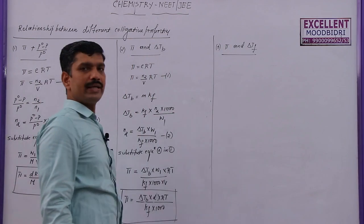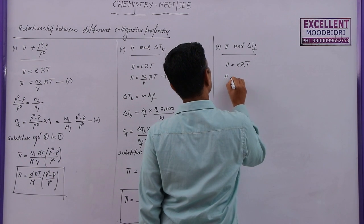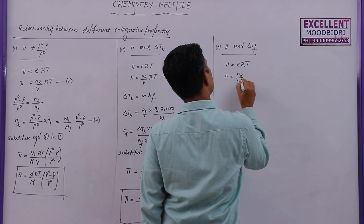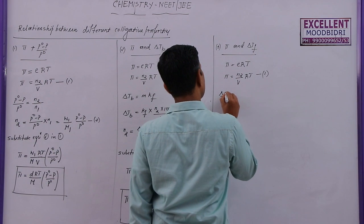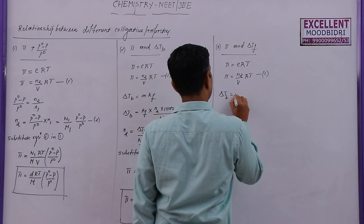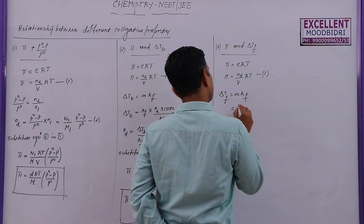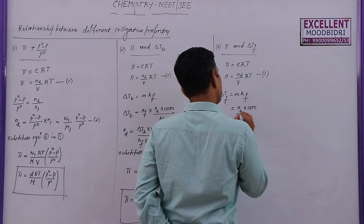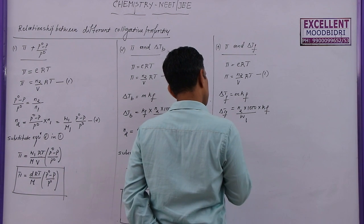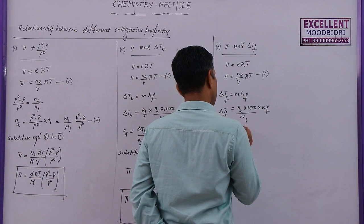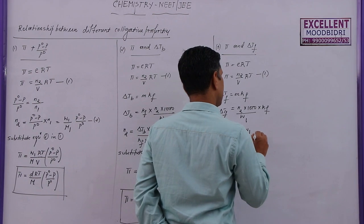Next, the relation between π and ΔTf. We know that π = C·R·T, or π = n₂/V · R·T, taken as equation 1. For depression in freezing point, ΔTf = M × Kf, where molarity M = n₂ × 1000 / w₁. So ΔTf = n₂ × 1000 × Kf / w₁. Solving for n₂: n₂ = ΔTf × w₁ / (1000 × Kf). This is taken as equation 2.